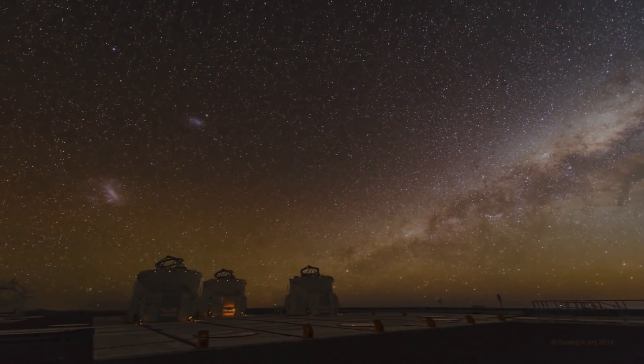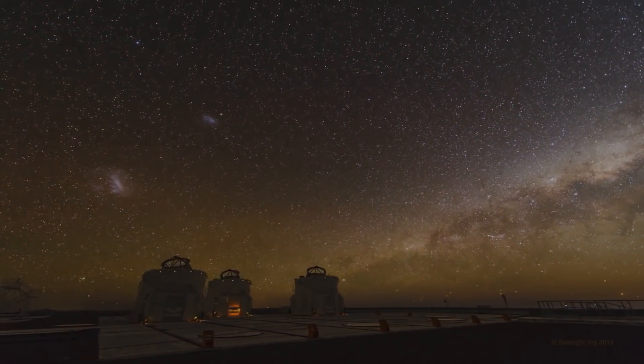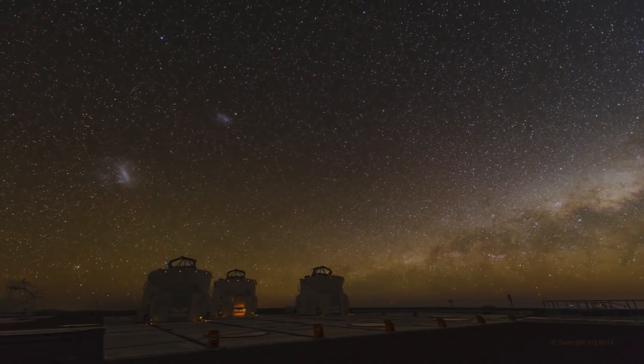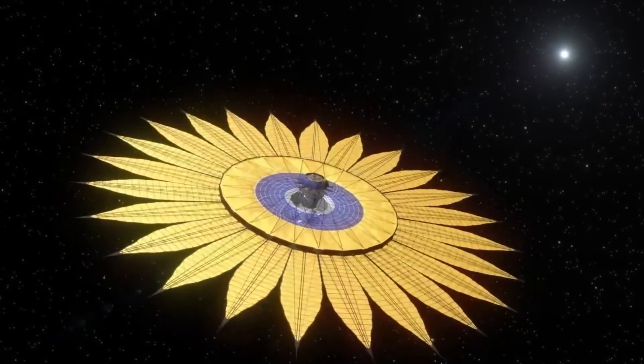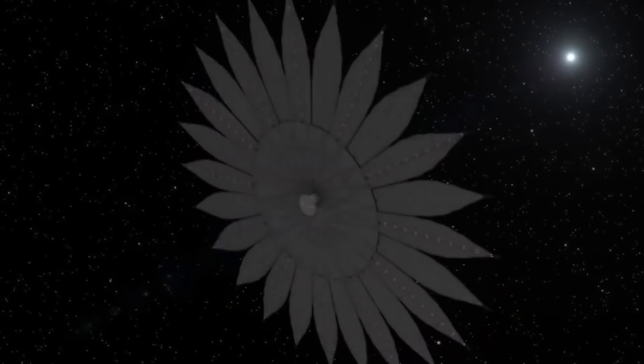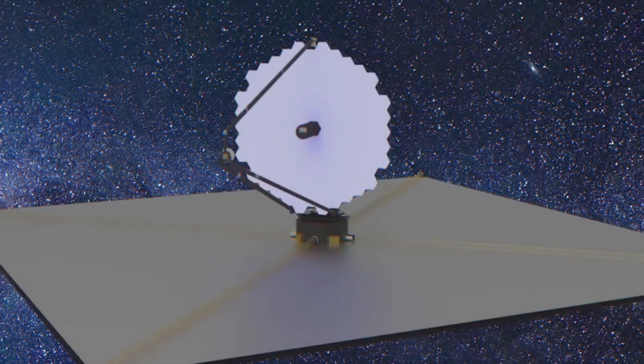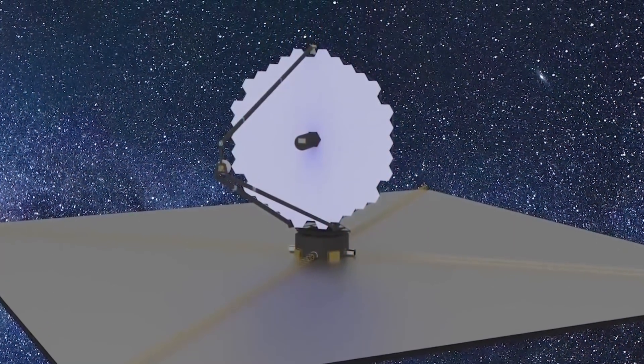The observatory would also observe wavelengths of light from the far ultraviolet to the near-infrared. To enable the extreme wavefront stability needed for coronagraphic observations of Earth-like exoplanets, the LUVOIR design incorporates three principles.